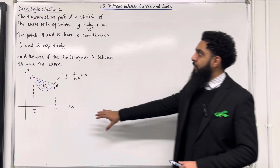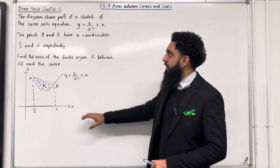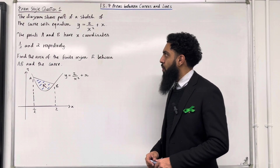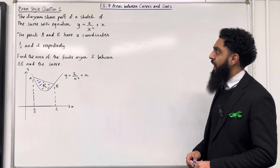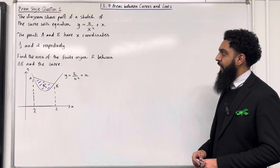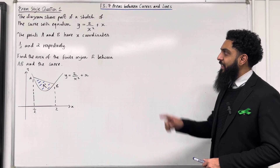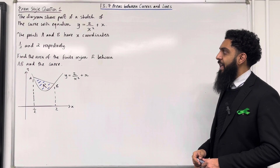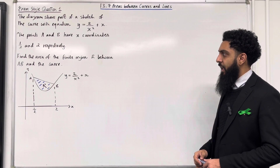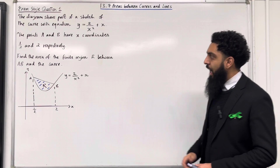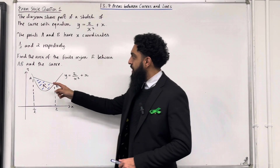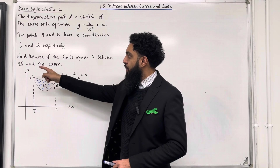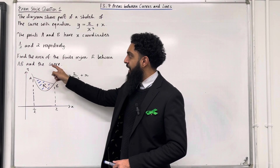The diagram shows part of the sketch of the curve with equation y equals 2 over x squared plus x. The points A and B have x-coordinates one half and 2 respectively. Find the area of the finite region R between A, B and the curve.